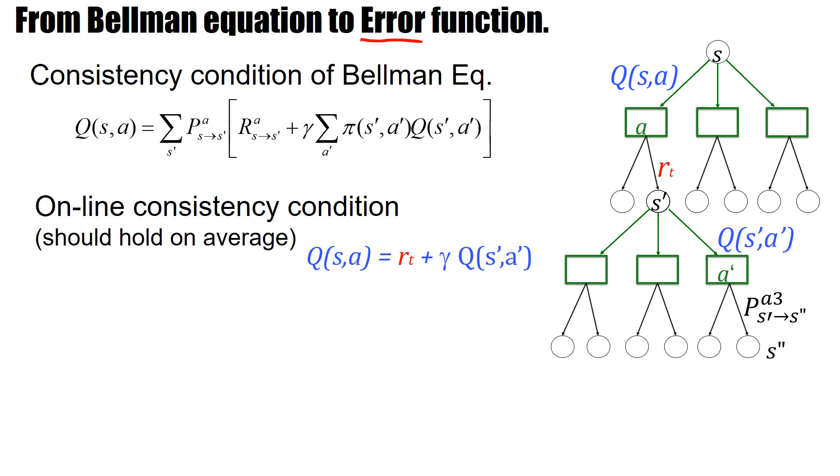Now what could such an error function look like? Remember that the Bellman equation imposes a consistent equation between Q values up here and Q values one step further down. Now of course here, all of this is the correct statistical estimate. But think we do something online. And then in an online fashion, such as SARSA, we would say basically the Q value up here should be explained by the reward and the Q value down here.